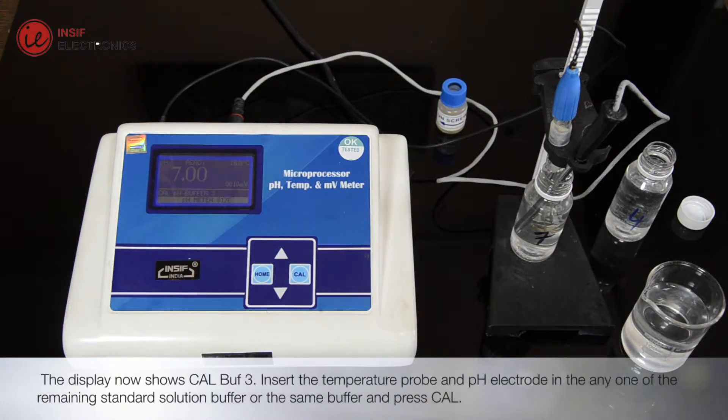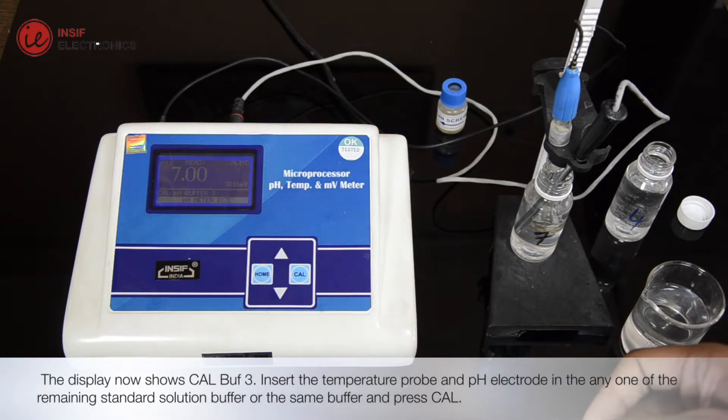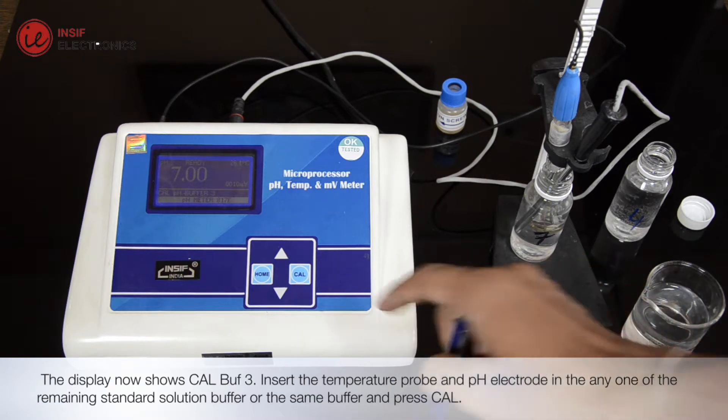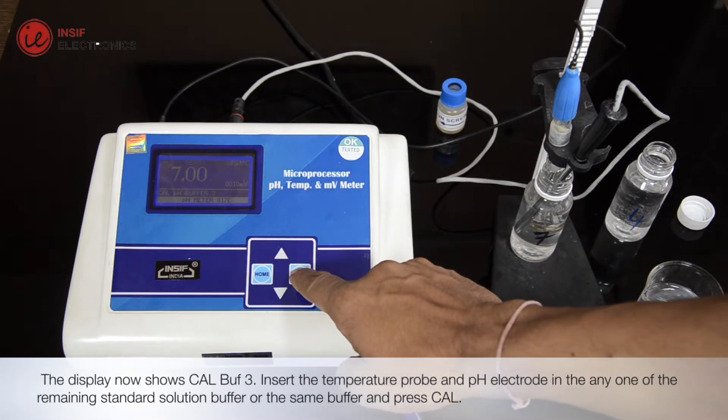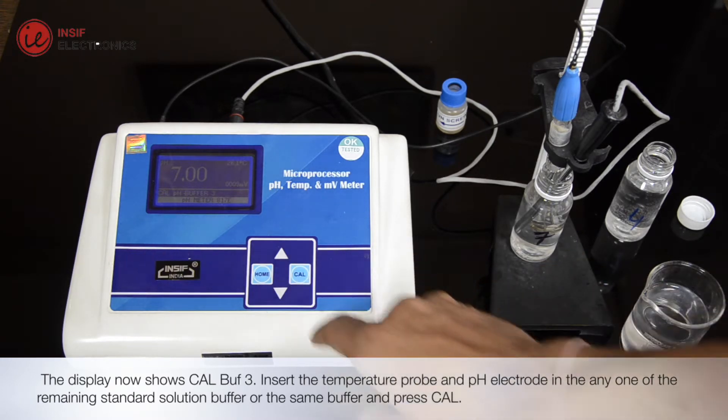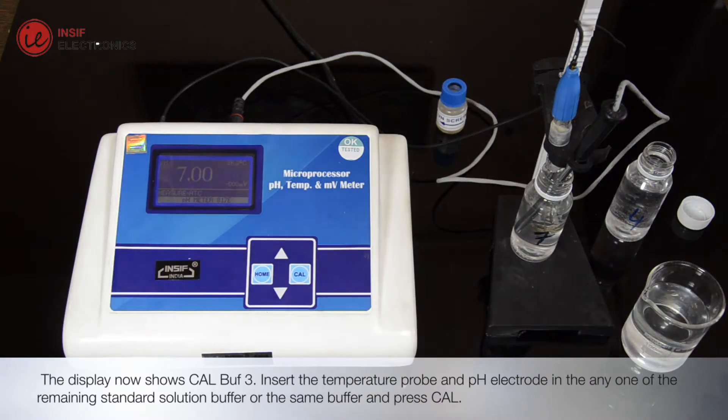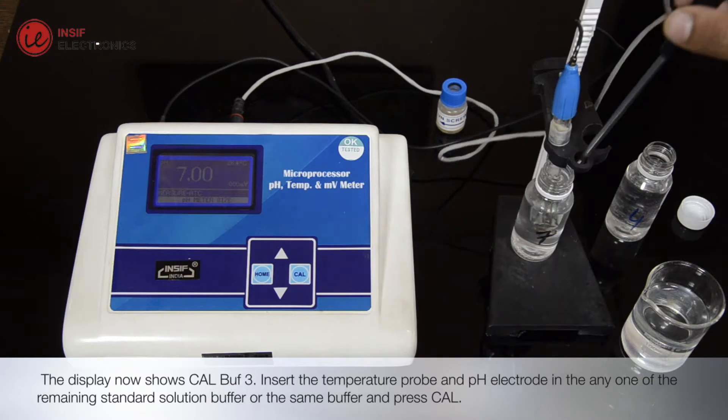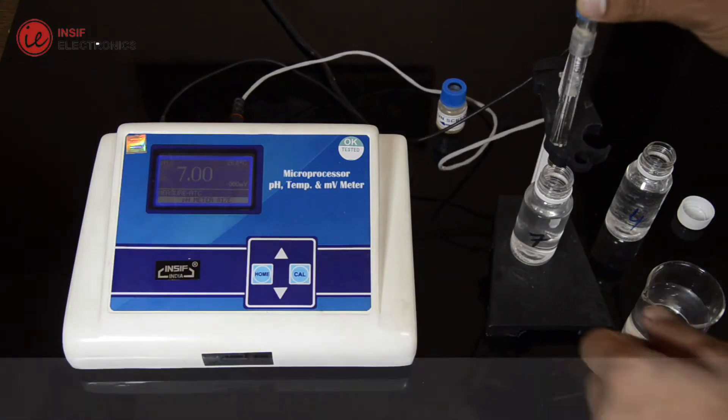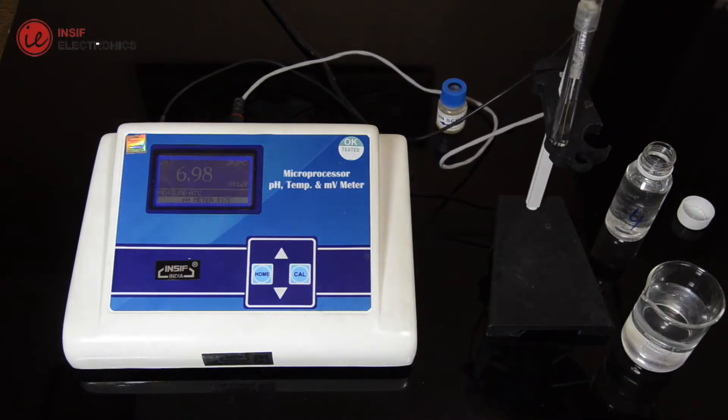The display now shows CalBuff3. Insert the temperature probe and pH electrode in the NE1 of the remaining standard solution buffer, or the same buffer, and press Cal. The backlight blinks, and instrument returns to measurement mode. The calibration procedure is complete now, and the instrument is ready for measurement.